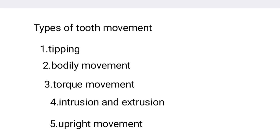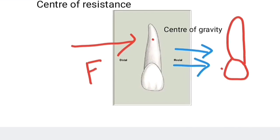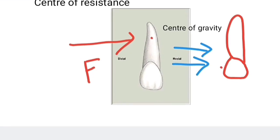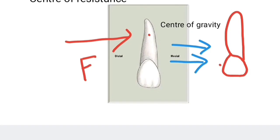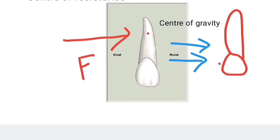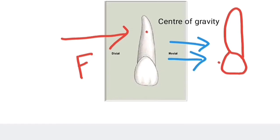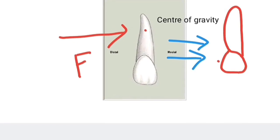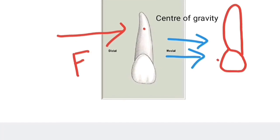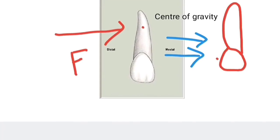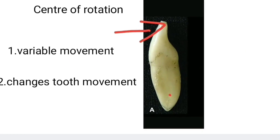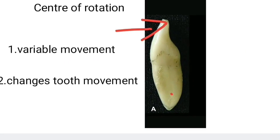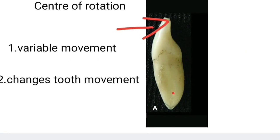When the whole body mass is considered at one point, it is called the center of gravity. When force passes through this point, the tooth moves in the direction of the force. This is called the center of resistance.